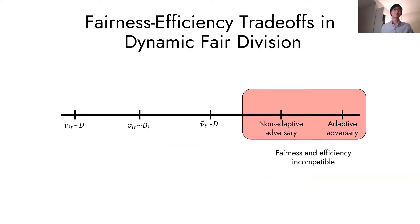We study this problem under a range of progressively stronger adversaries. On the stronger side, we have the standard online algorithm adversaries, where the adversary chooses a worst-case item sequence for your algorithm. We show in this case that fairness and efficiency are not compatible.